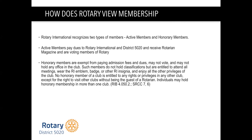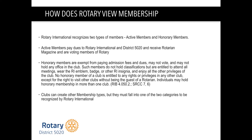Honorary members are everything else — they don't pay dues to RI and the district, they can't vote, and they can't hold office in a club. They don't have classifications, but they are entitled to attend all meetings and wear Rotary memorabilia and badges. That doesn't make you a Rotarian in other clubs, but you do have the right to visit other clubs. Clubs can create as many kinds of membership types as they want, but they must fall into one of these two categories to be recognized by Rotary International.